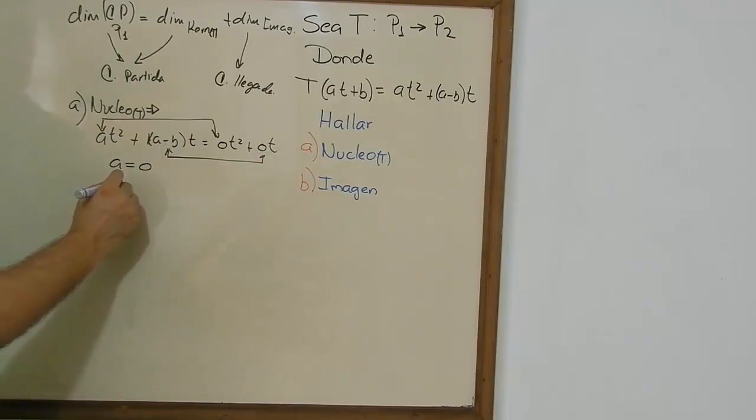That'll help us a lot. So that means that A minus B is equal to 0, so A is equal to B. And since A is equal to 0, B is equal to 0.